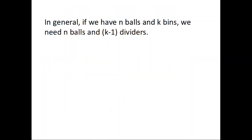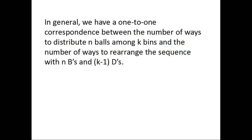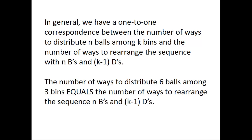In general, if we have n balls and k bins, we need k-1 dividers. Since we have a 1-to-1 correspondence between the number of ways to distribute n balls among k bins and the number of ways to rearrange the sequence with n b's and k-1 d's, the answer is n plus k-1, choose k-1.